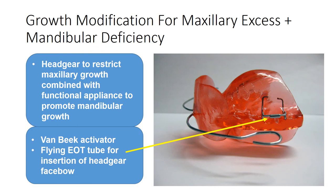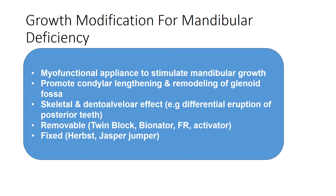For maxillary excess combined with mandibular deficiency, headgear is used to restrict maxillary growth while combined with a functional appliance to promote mandibular growth — for example, the Van Beek activator, which has a flying Eot tube for insertion of the headgear facebow. For mandibular deficiency alone, growth modification is undertaken via myofunctional appliances to stimulate mandibular growth, promoting condylar lengthening and remodeling of the glenoid fossa. The effect includes both skeletal and dental-alveolar changes, including differential eruption of the posterior teeth.